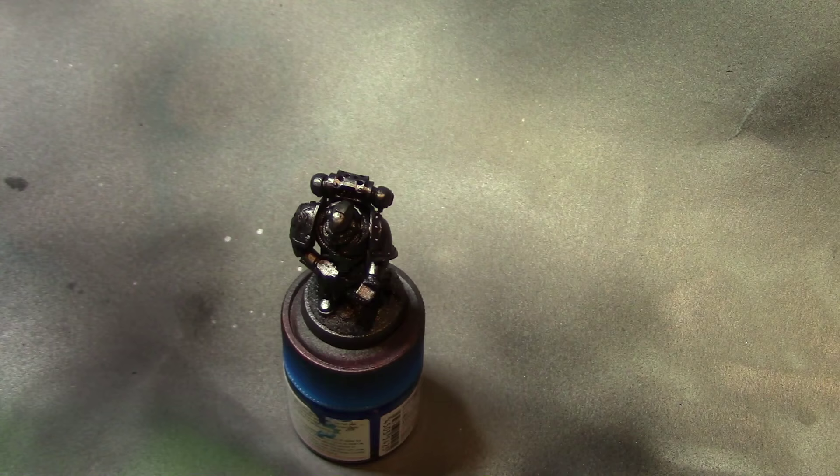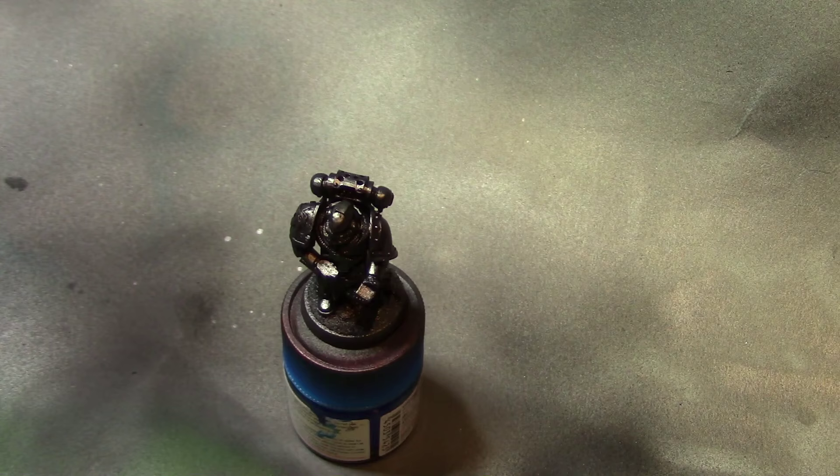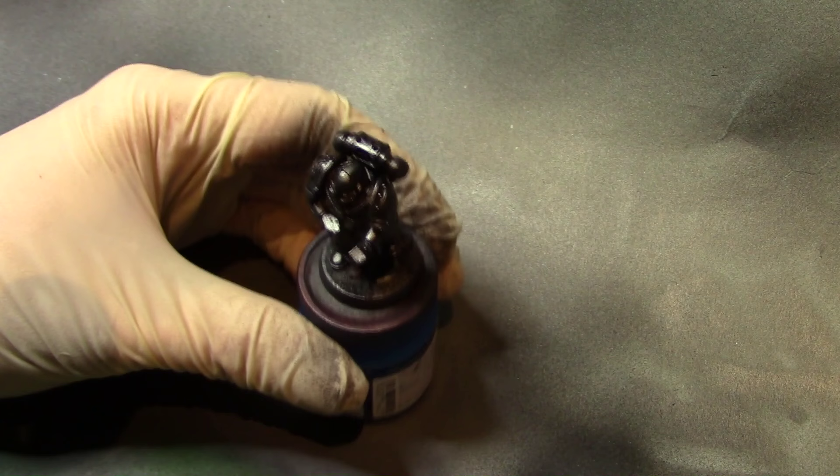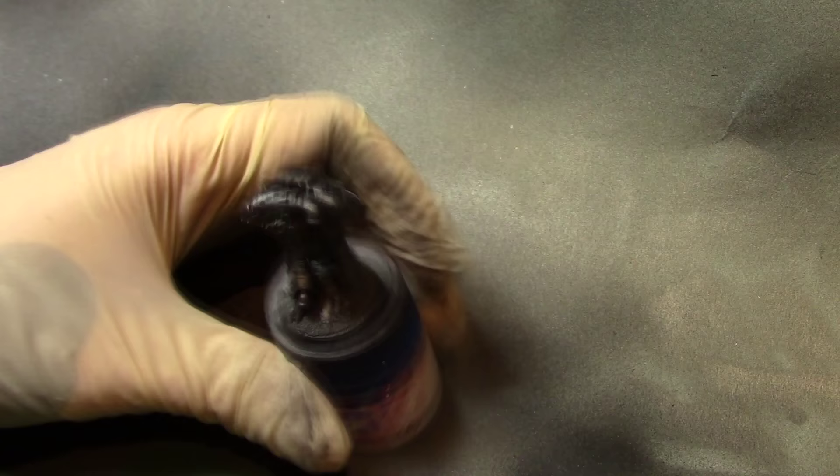Okay, now after this we're going to come in with Vallejo Chainmail Silver and we're going to basically apply this at kind of like a 45 degree angle. So we're not spraying up underneath, we're just spraying down. This gives us the first parts of the highlight basically with how this whole process works.